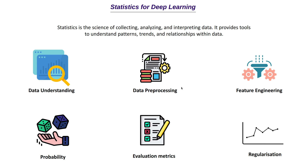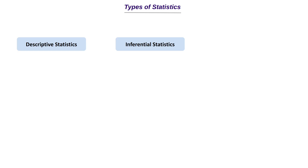The next important topic is about the different types of statistical approaches. Statistics can be broadly classified into descriptive statistics, inferential statistics, and prescriptive statistics. Inferential statistics is also called predictive statistics. Let's try to understand each of these three types individually, and how they are helpful in a deep learning, machine learning, or data science scenario, and also in scientific experimentation.